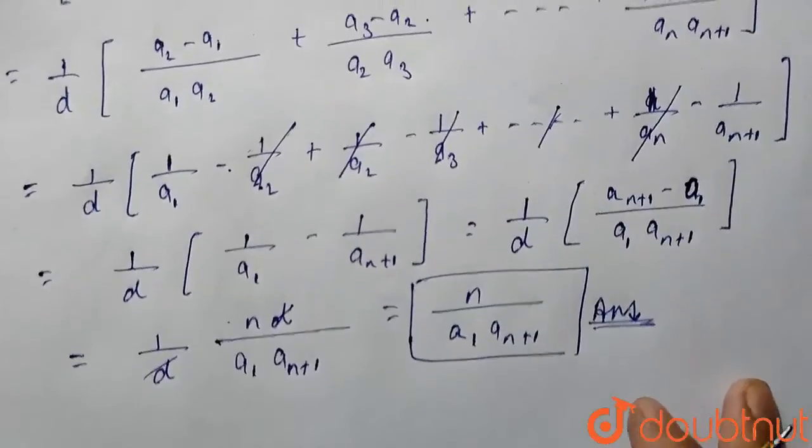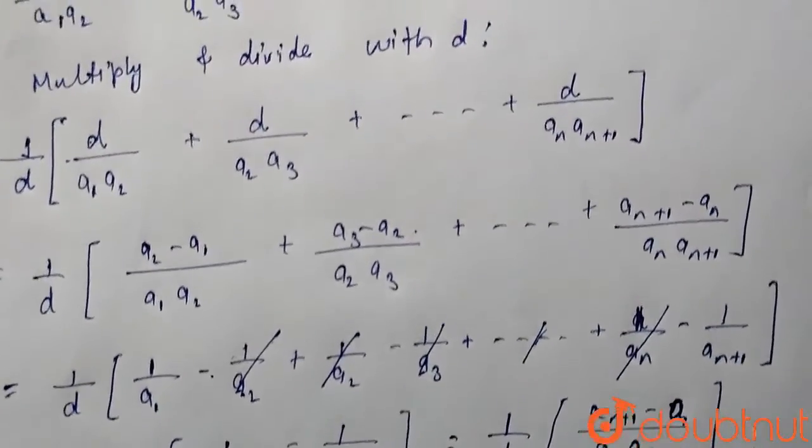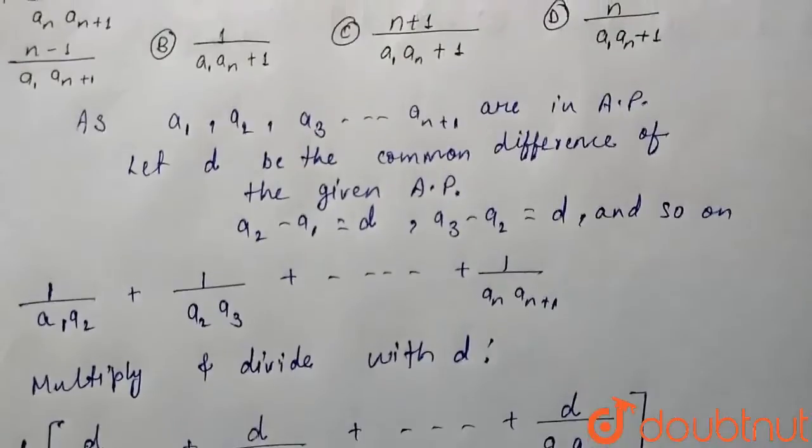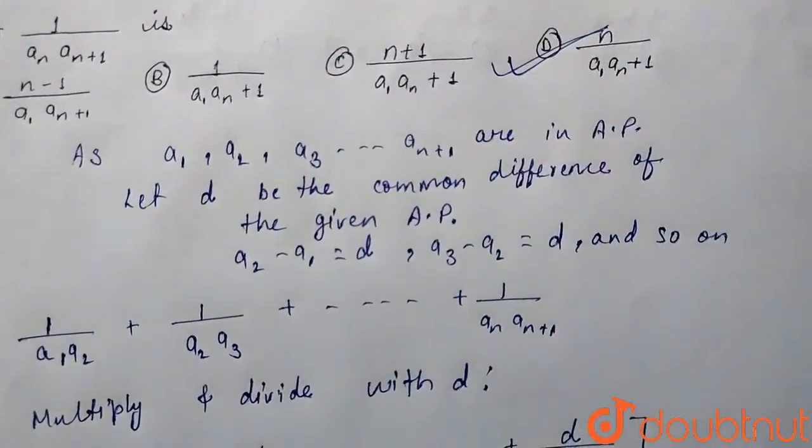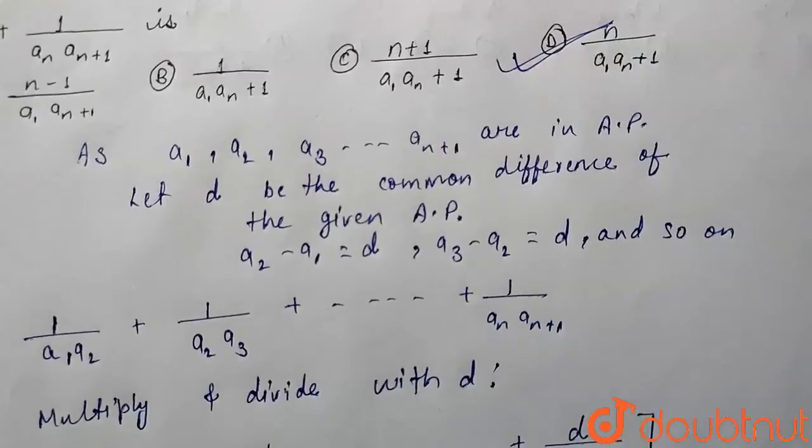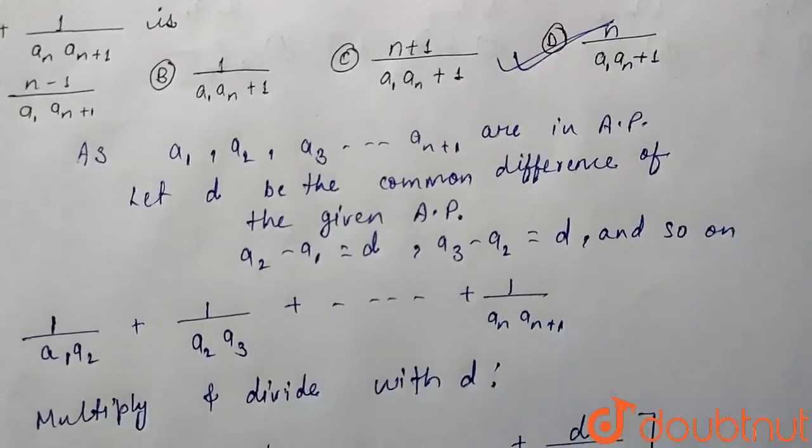And this is option number, let's check the option. This is option number d. So the final answer is n upon a1an plus 1.